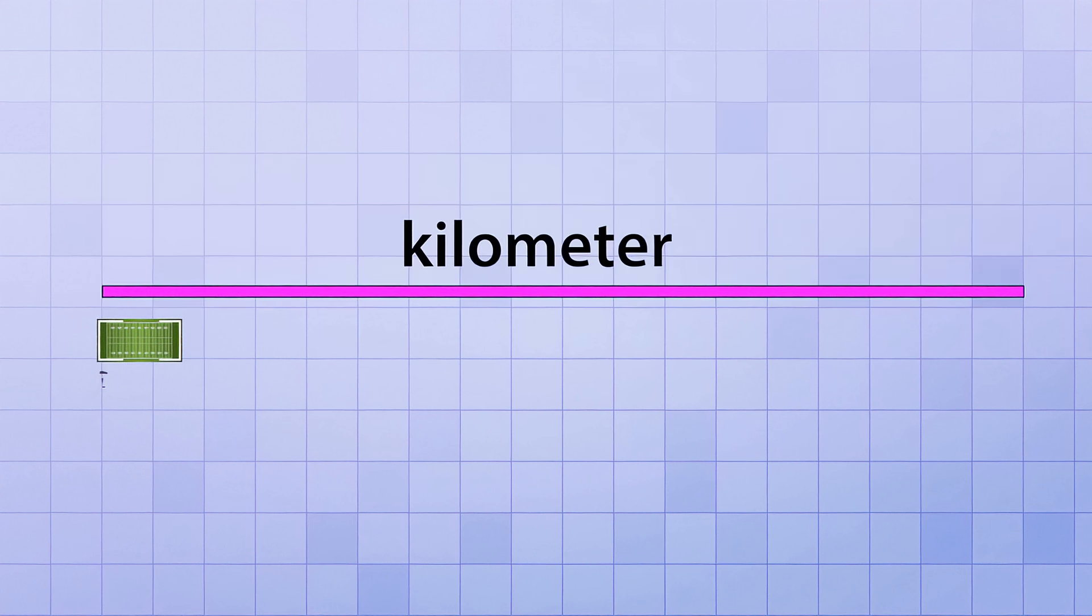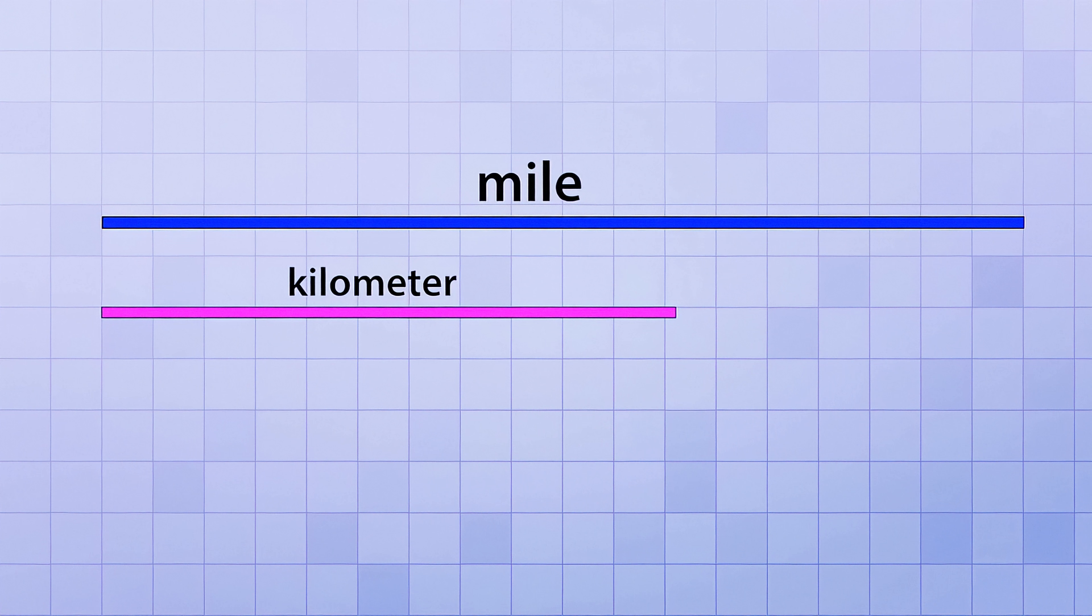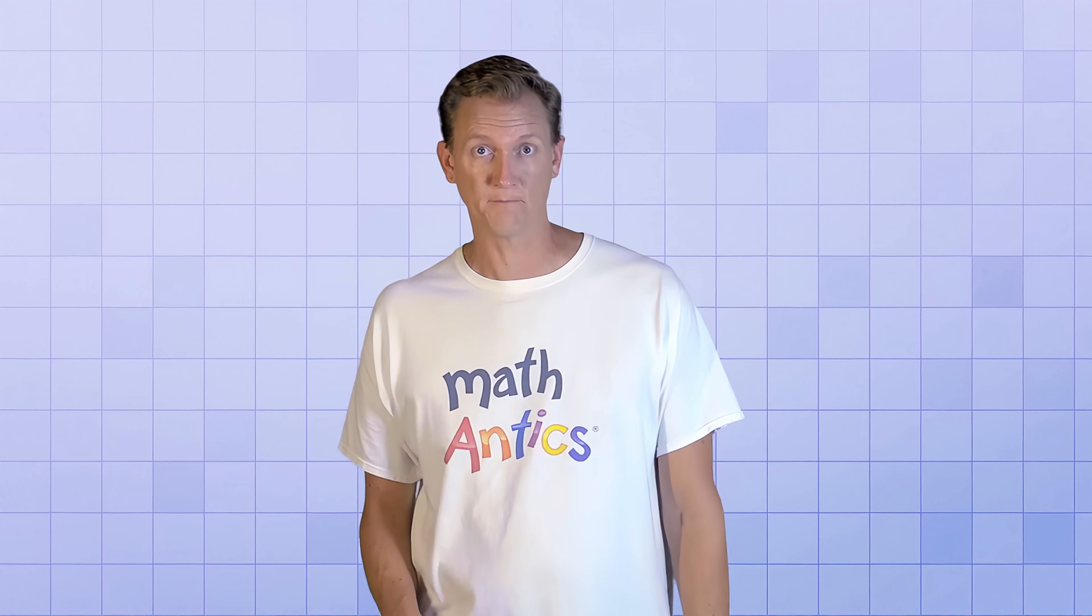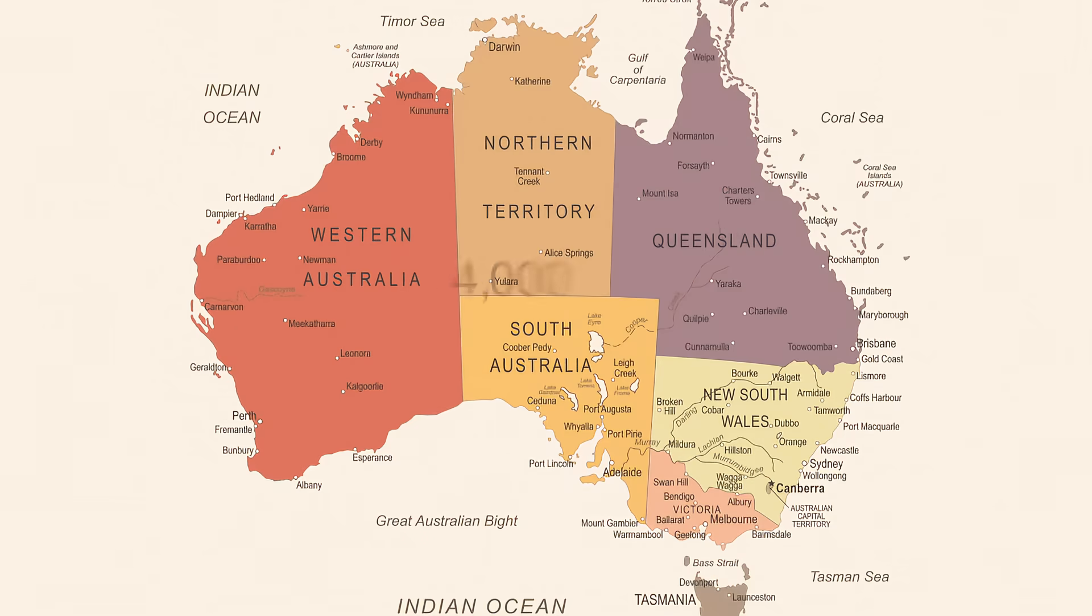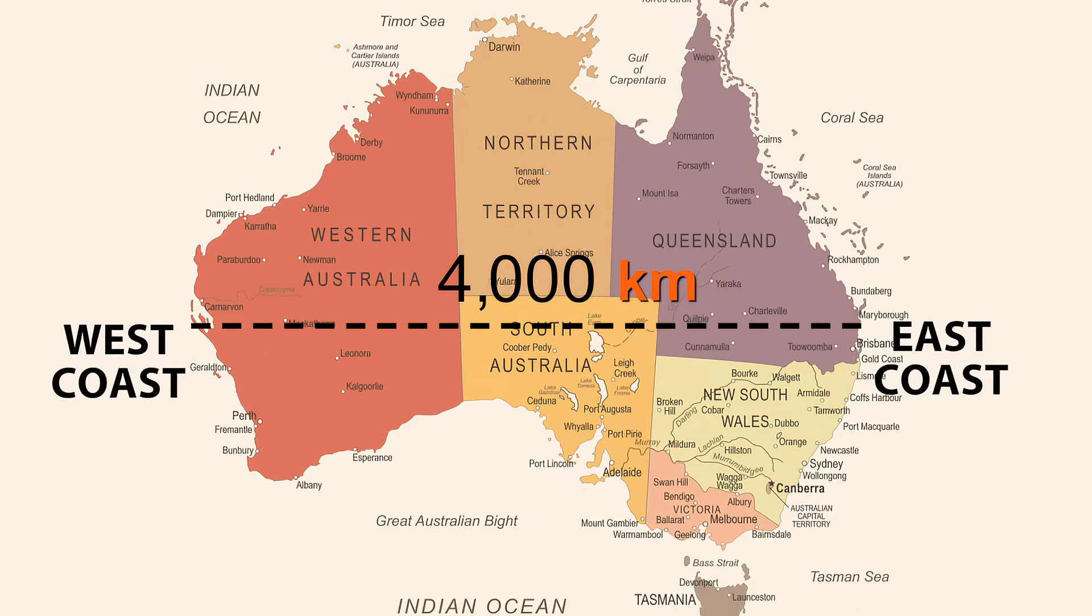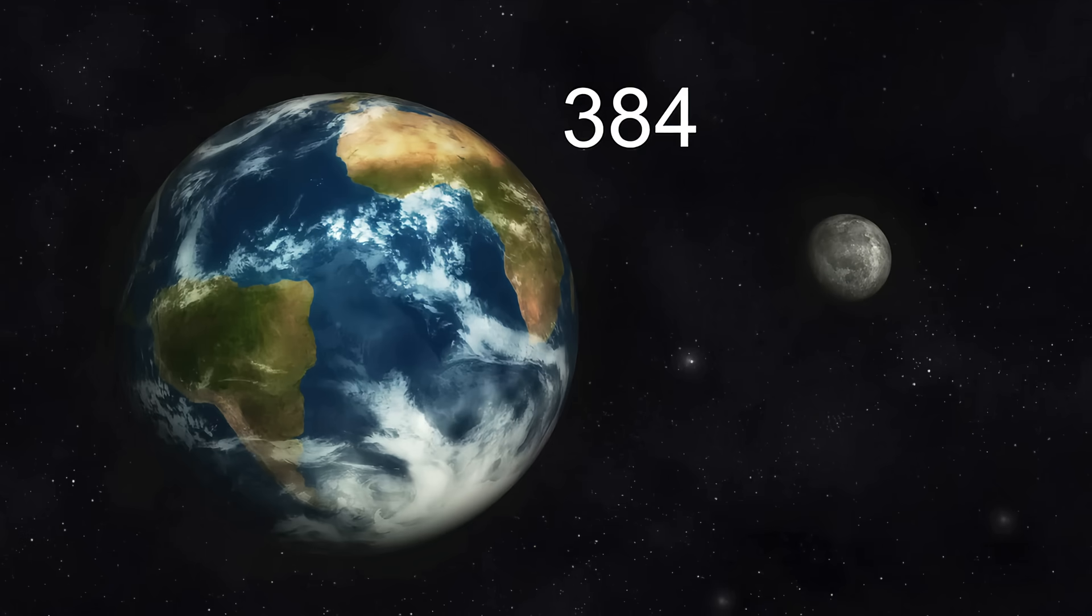As you can see, a kilometer is in the same scale range as a mile, but a mile is even longer than a kilometer. In fact, it takes just a bit more than 1.6 kilometers to be the same distance as a mile. And because they're big like miles, kilometers are also primarily used to measure distances between different locations on the Earth, or even in space. For example, it's about 4,000 kilometers from the east coast of Australia to the west coast, and it's approximately 384,000 kilometers from the Earth to the Moon.